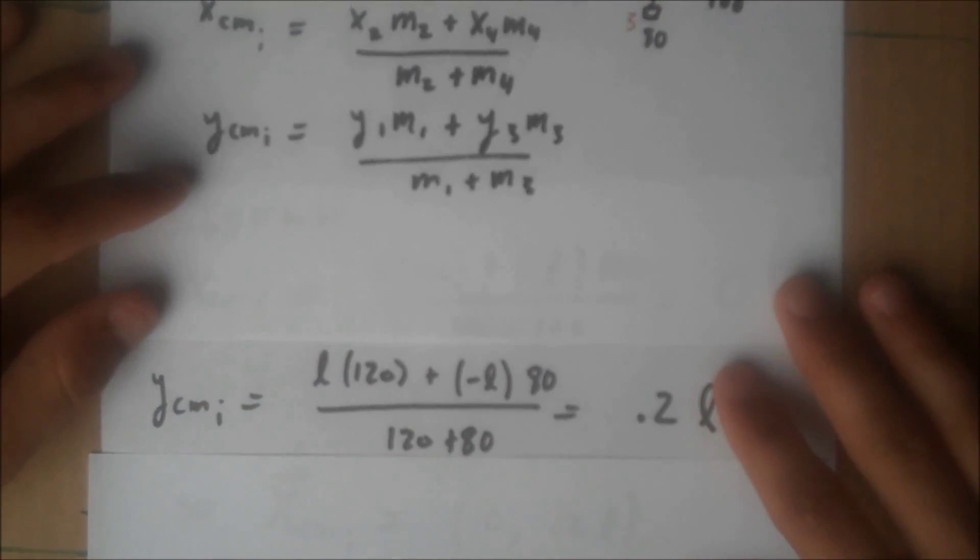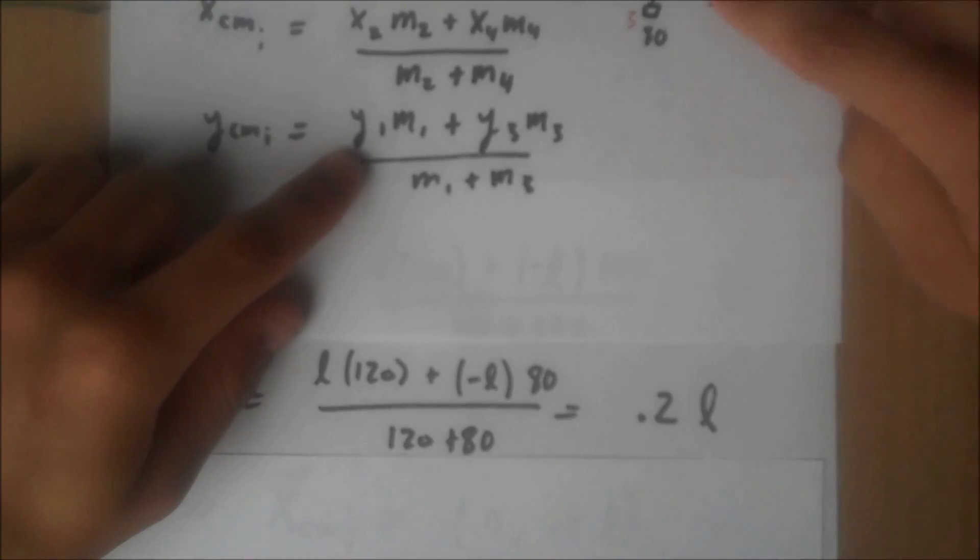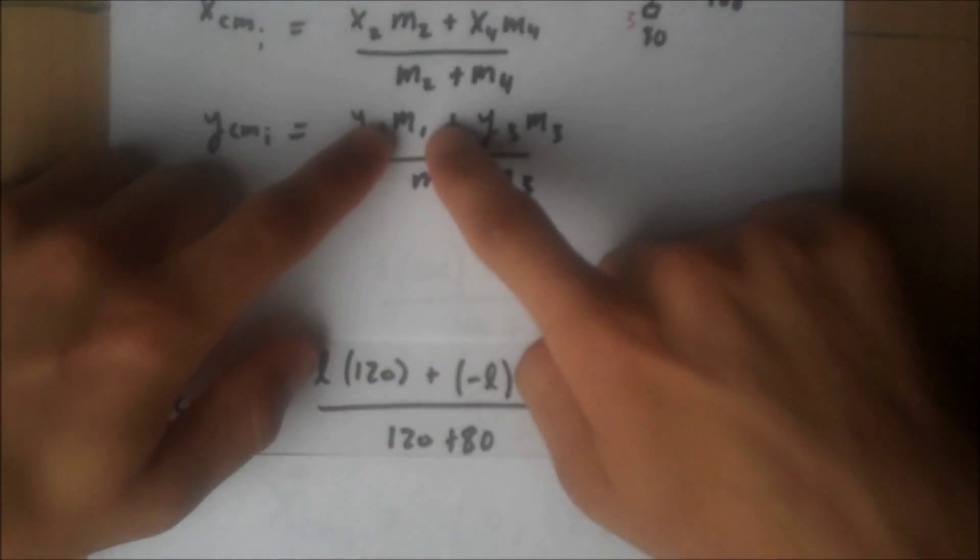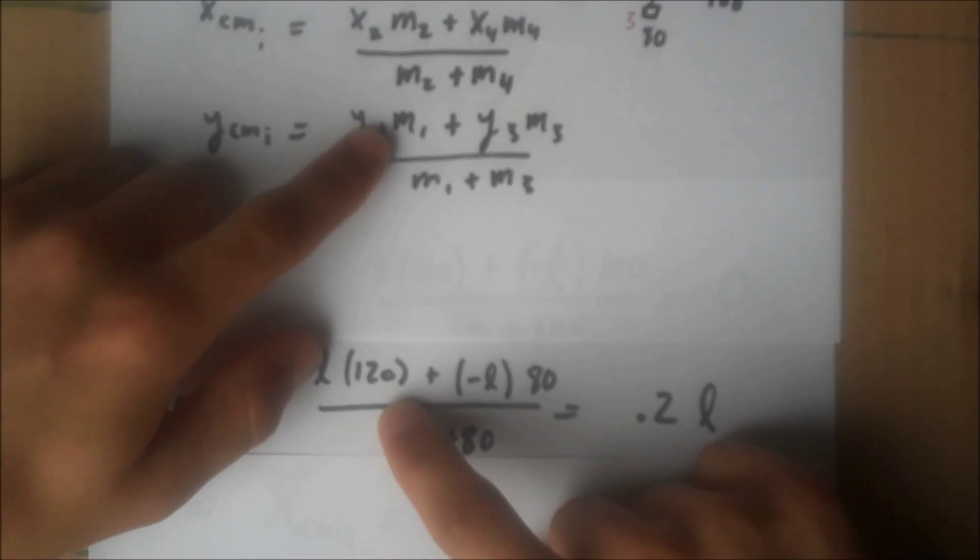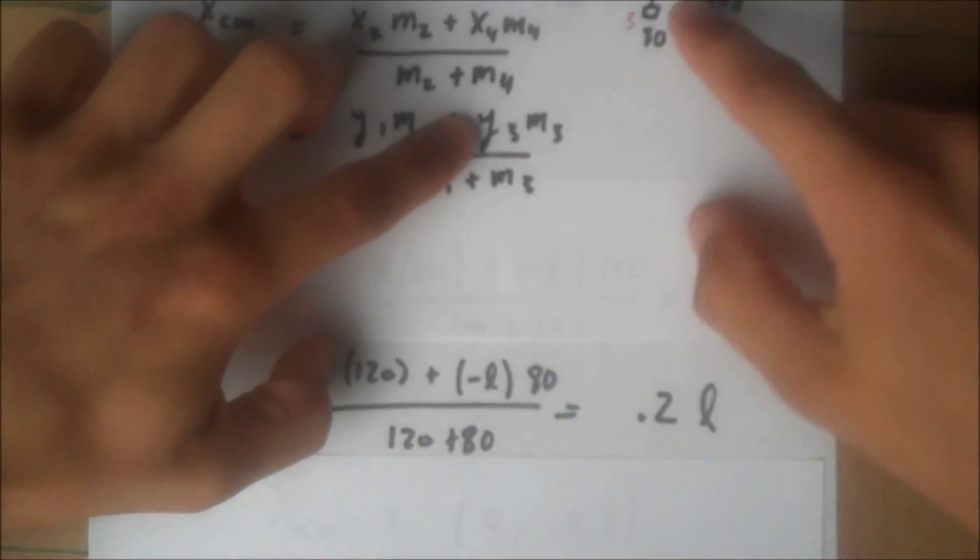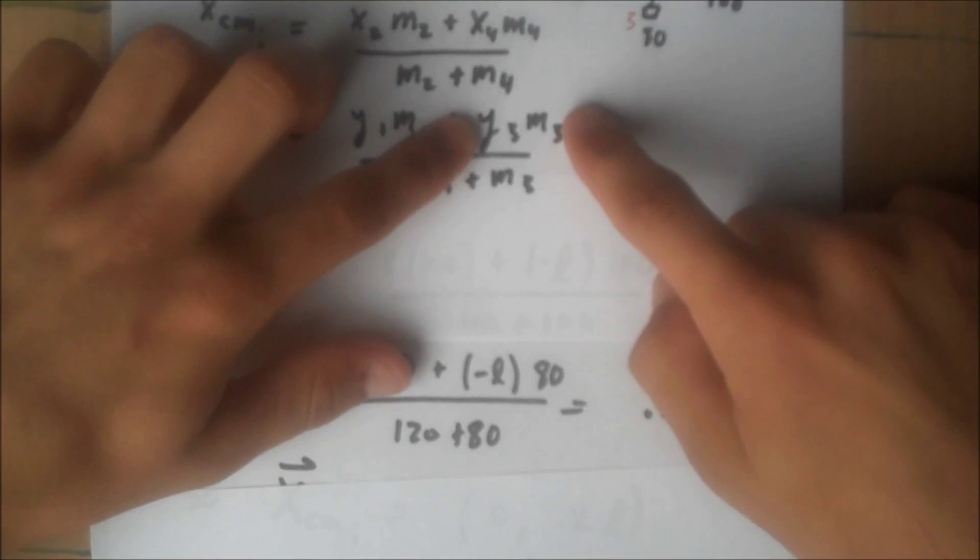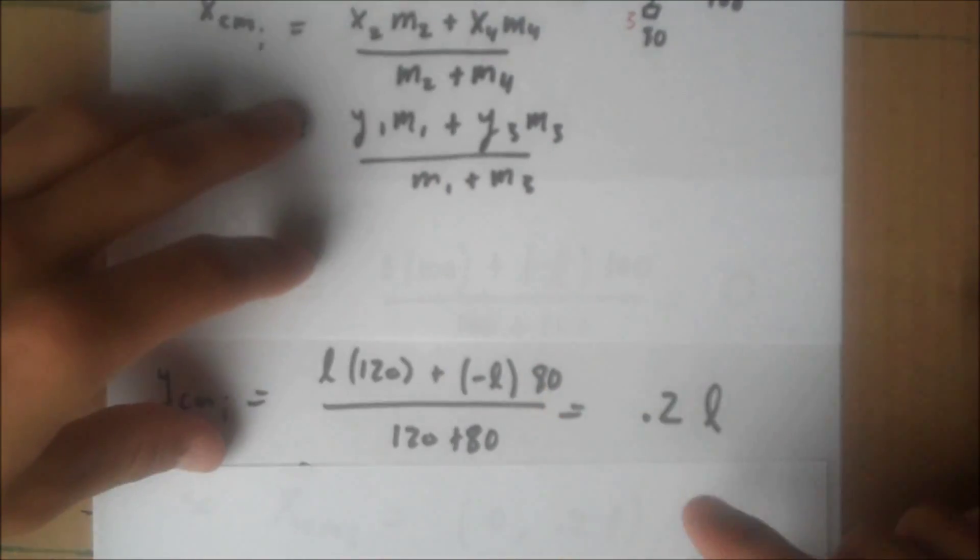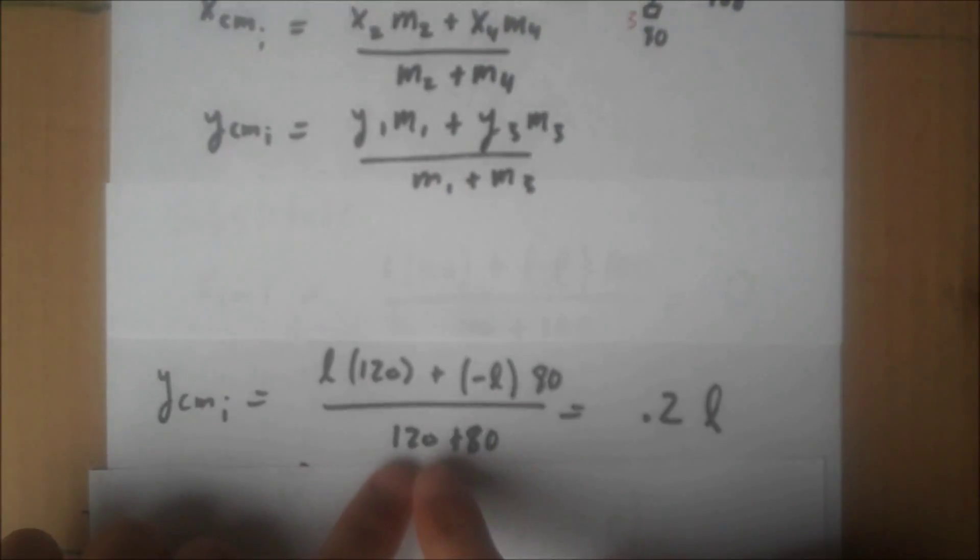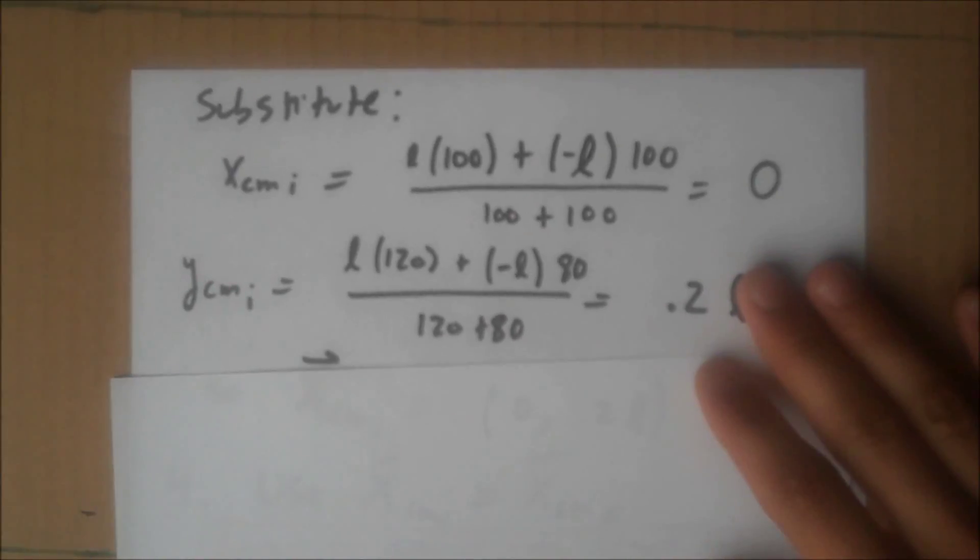Now for the y, y₁'s position is positive L and y₁'s mass is 120. y₃'s y position is negative L and its mass, m₃, is equal to 80. So now we substitute that in: m₁ is 120, m₃ is 80. Now we've substituted in values.